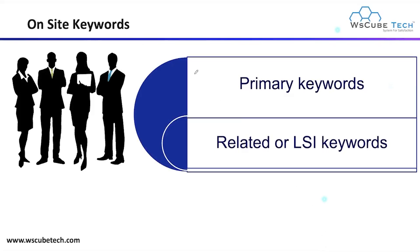Next we have on-site keywords. As the name shows, on-site means the organic keywords which are used to rank your website organically. For on-site keywords, we have two types: one is your primary keyword, and the other is your related or LSI keyword. LSI stands for Latent Semantic Index keyword.